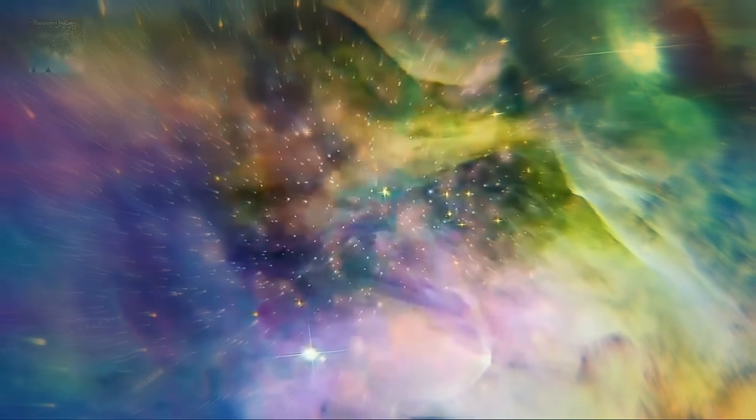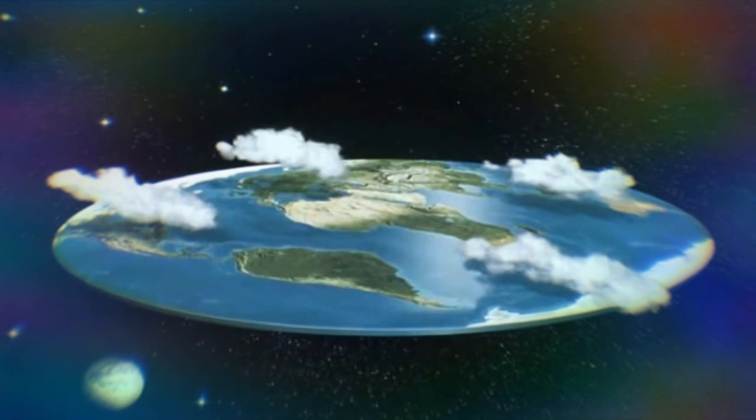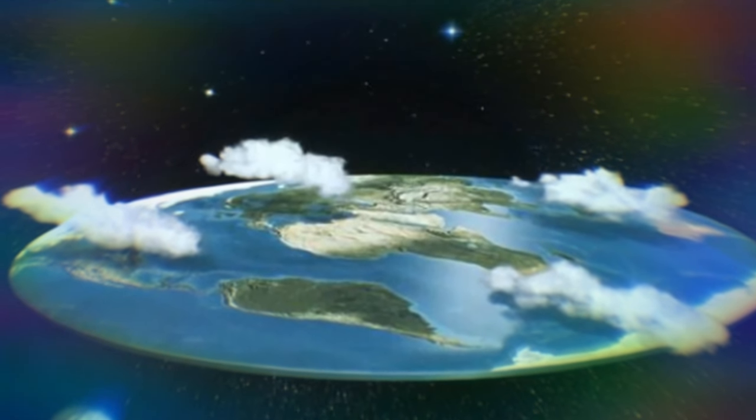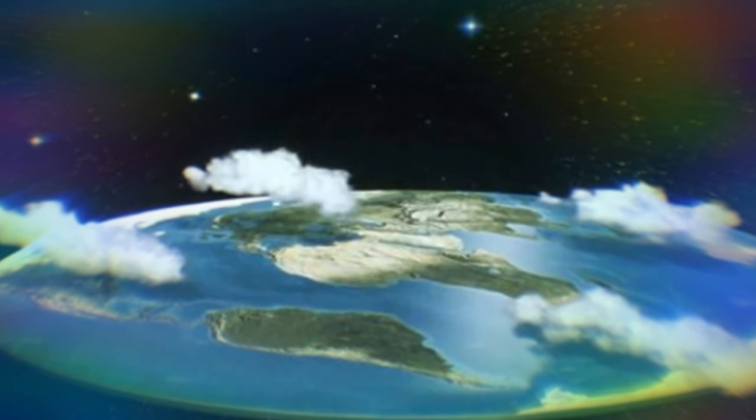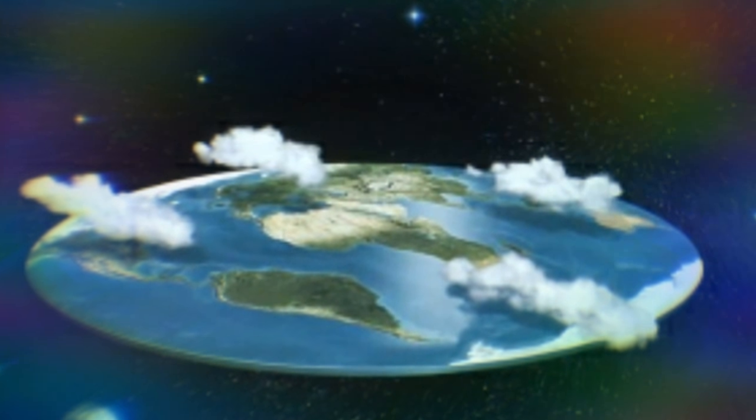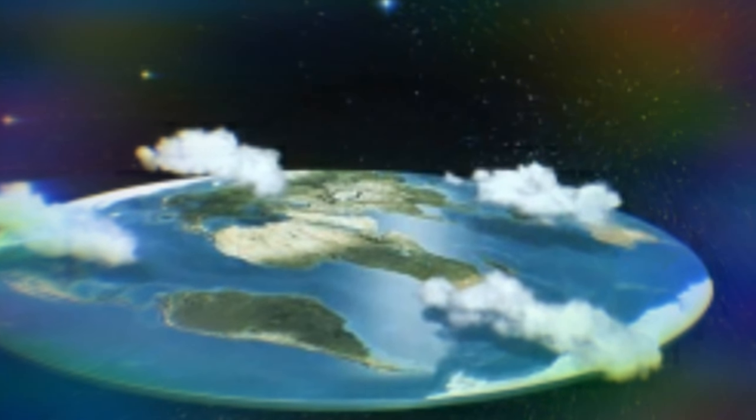People who believe in a flat Earth assume that gravity would pull straight down, but there's no evidence to suggest it would work that way. What we know about gravity suggests it would pull toward the center of the disk. That means it would only pull straight down at one point on the center of the disk.